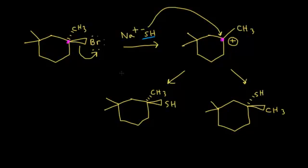Looking at our original molecule, the bromine was originally coming out at us in space. In the first product, the SH is adding on coming out at us — that's retention of the absolute configuration. In the second product, the SH is going away from us in space — that's the inversion product. Remember, there's a slight preference for the inversion product due to the bromide anion forming an ion pair with the carbocation. So always think about stereochemistry in an SN1 reaction — when you get your product, look at the chirality centers and think about what products you're getting using stereochemistry.